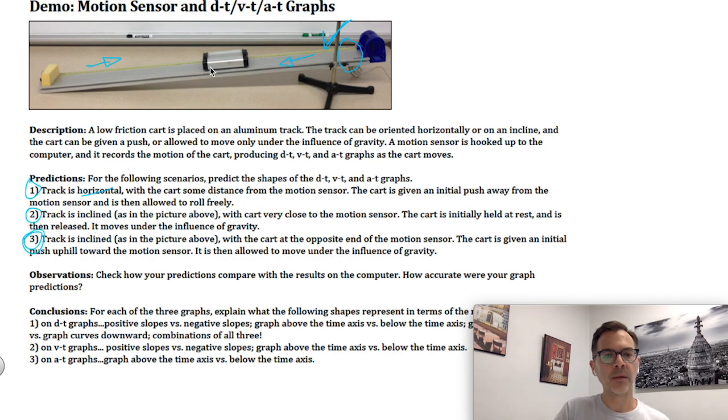Finally, in trial number three, the track is going to look exactly like this, except the cart is going to begin over here by this check mark, and I'm going to push it uphill. I'm going to push it with just enough force so that it approaches but does not hit the motion sensor, stops somewhere around here before it gets to the blind spot, and then starts rolling back down the hill. So now that I've described in words what you're going to see, let's take a look at the videos of what the motion looks like, and then you can make your predictions.